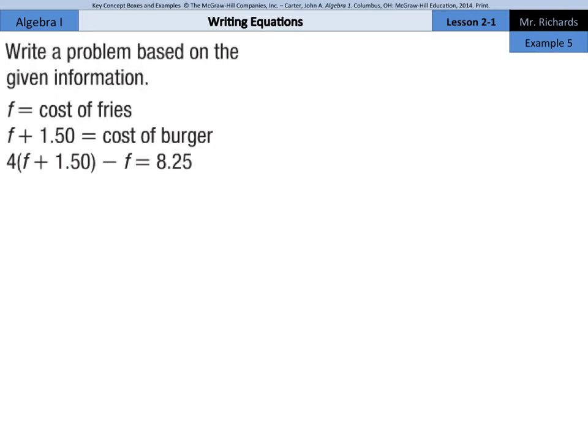In our last example, example 5, it shows how to write a verbal problem from information given in equations. So write a problem based on the given information. F equals the cost of fries. F plus $1.50 equals the cost of a burger. So, fries plus $1.50 is the cost of a burger. Then we have this. 4 times F plus $1.50, which is the cost of the burger, so maybe like 4 burgers, minus the cost of the fries is equal to $8.25.